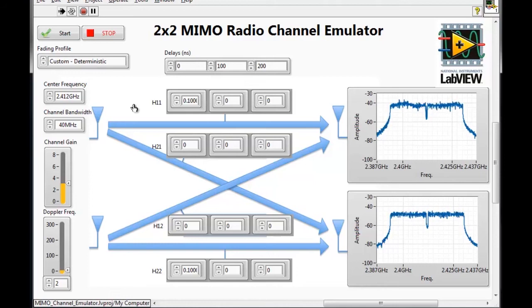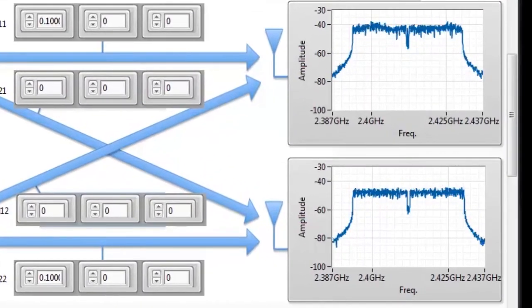Here is the LabVIEW front panel for our 2x2 MIMO radio channel emulator. On the left-hand side, we can see our generation settings. In the middle, we have the different parameters for the fading models applied on the FPGA. On the right-hand side, we see the spectrums acquired by our analyzers.